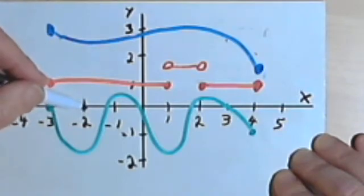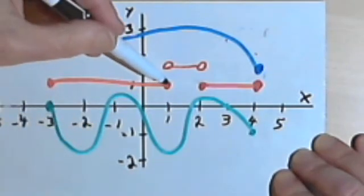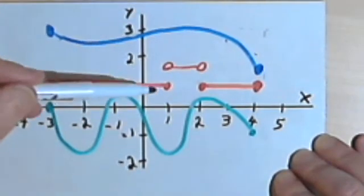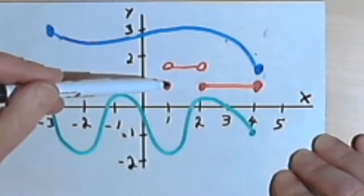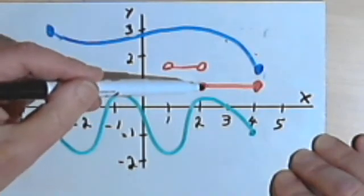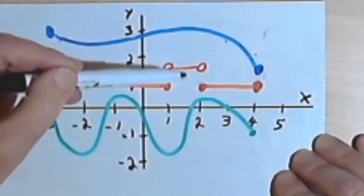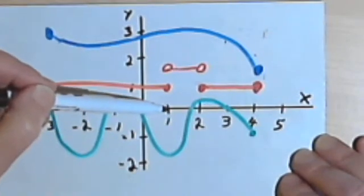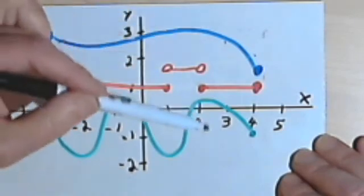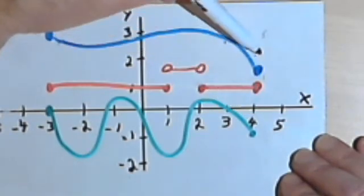I can do that at negative 2, at negative 1, at 0, at 1. Even though at 1 my red graph jumps around, I still know that at 1 I've got an output which is over here at 1 on the y-axis. At 2 I've got an output, and my input stops at 4.